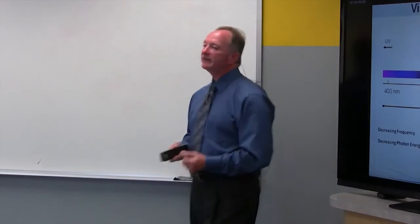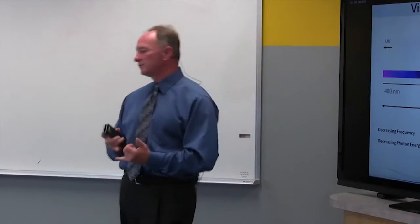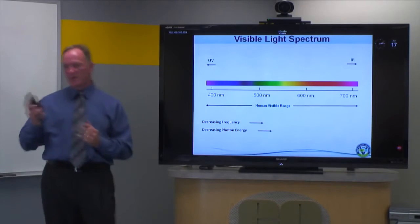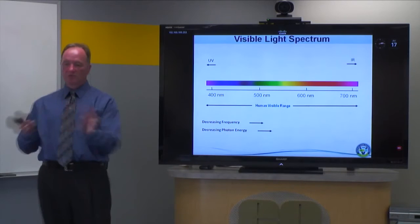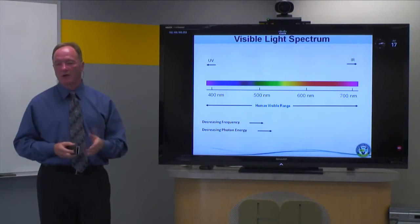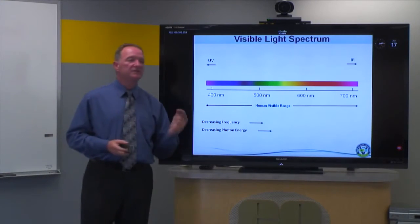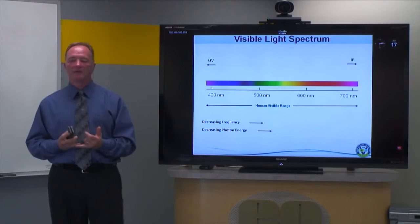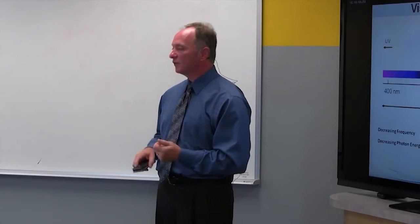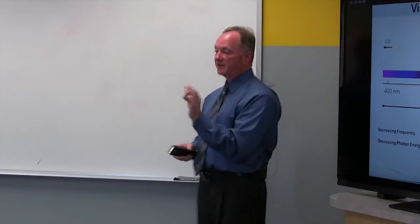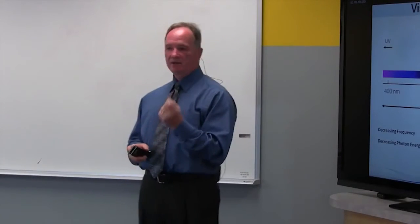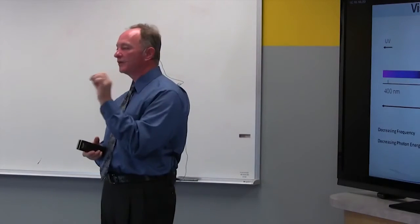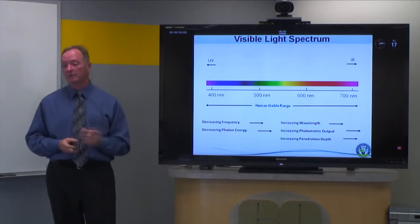Looking at the visible light spectrum in more detail: UV starts at about 400 nanometers and shorter, and IR is about 700 nanometers and greater, with the human visible range in between. Decreasing frequency and decreasing photon energy both move toward the right. IR light has more photons but each photon is less energetic, while UV has very high individual photon energy but fewer photons — which is why UV interacts so badly with your skin, damaging it through high-energy particle interaction.